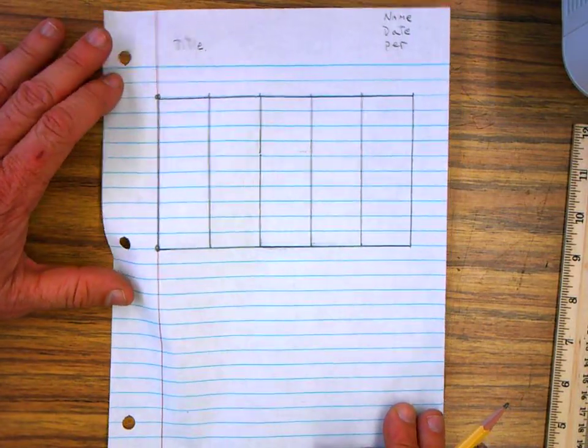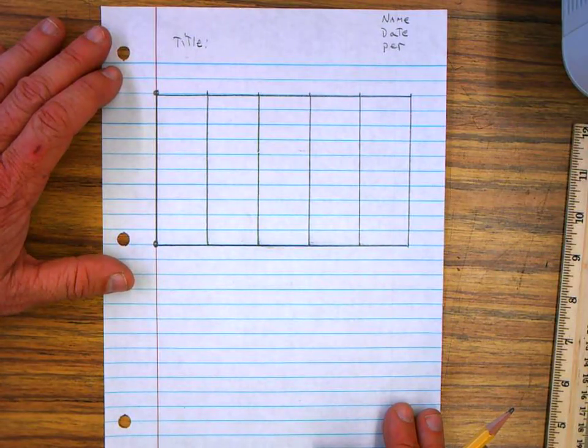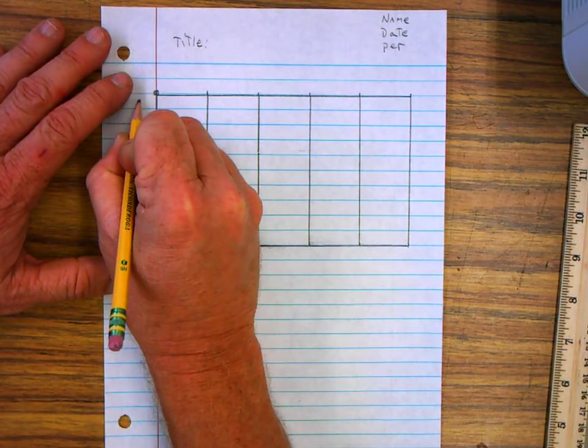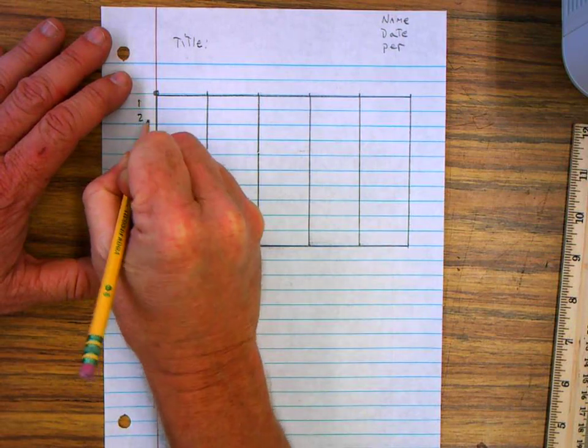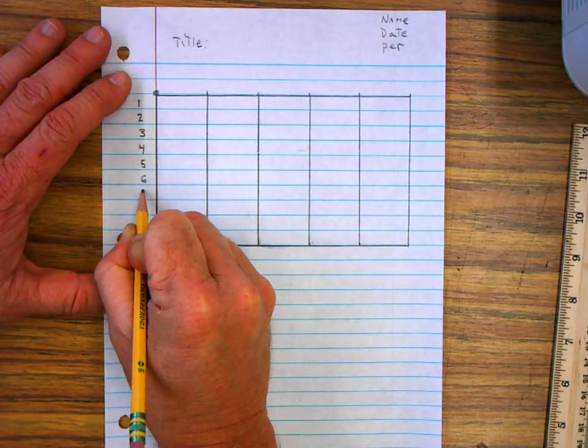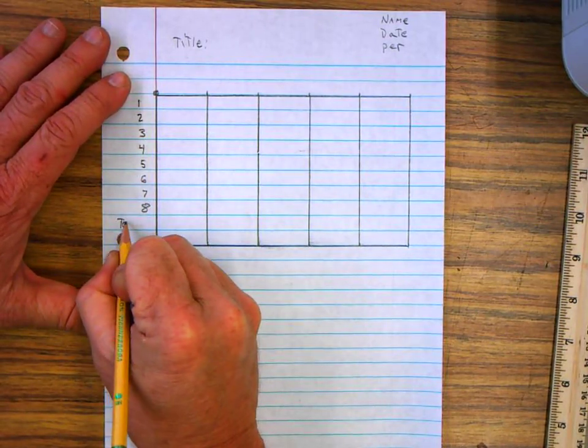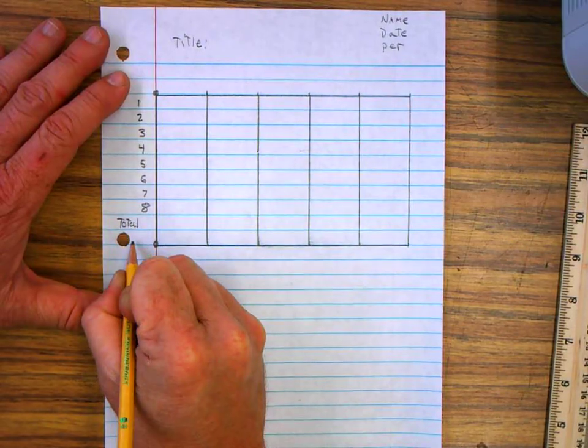Your table should start looking something like this. On the left-hand side, you're going to mark this one, two, three, four, five, six, seven, eight. Put in total. And then average.